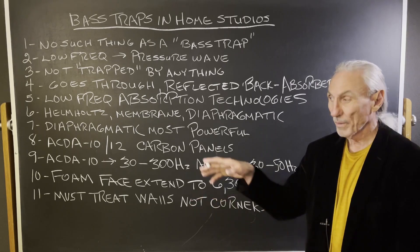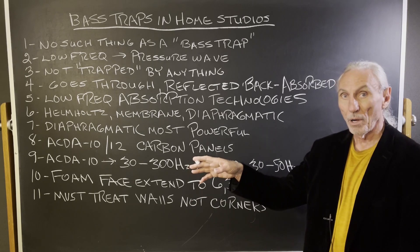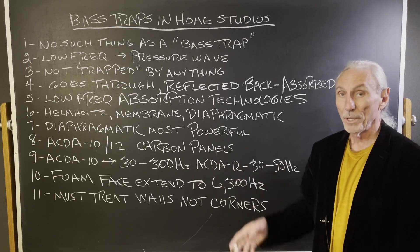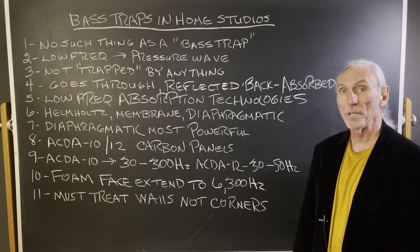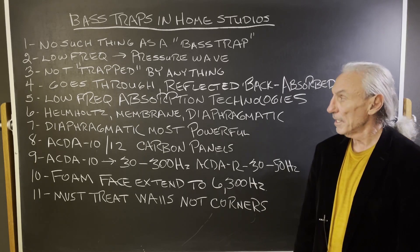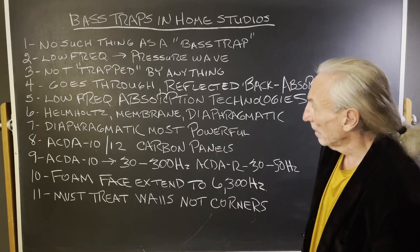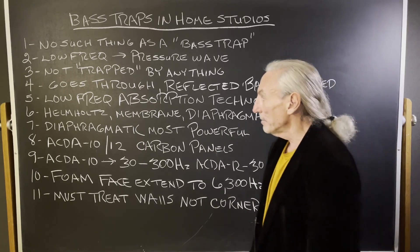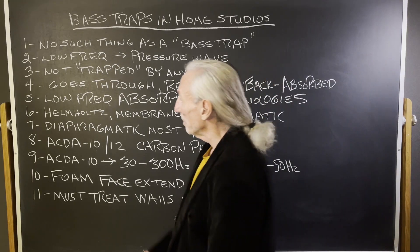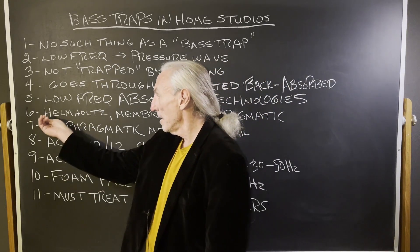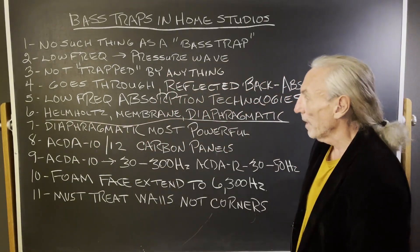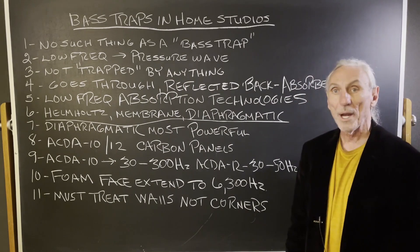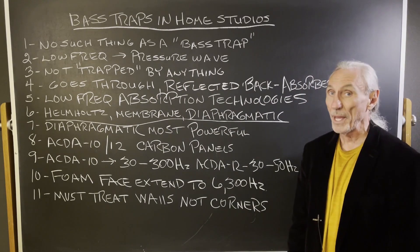It can go through, hit another wall and come back, or attenuate — the product does something at certain frequencies and amplitudes. There are three kinds of low frequency absorption, and none of them have the word 'bass trap' in them: Helmholtz, membrane, and diaphragmatic.